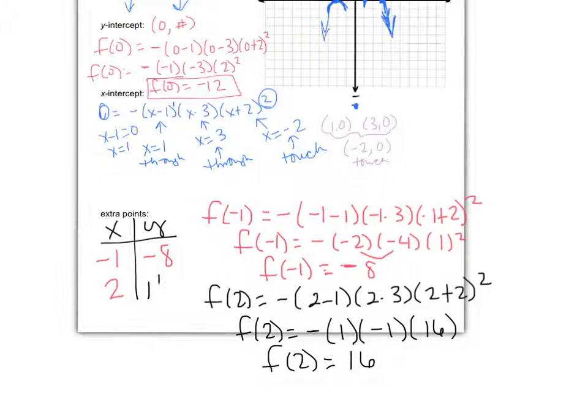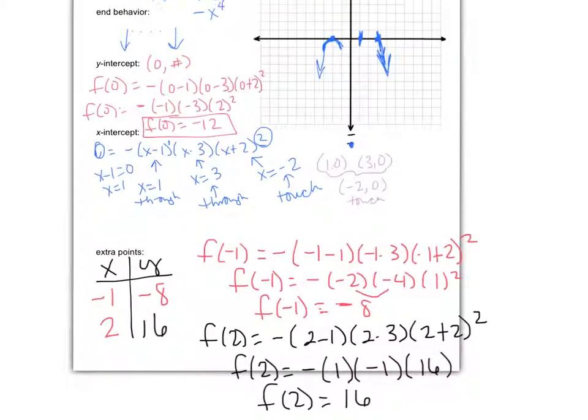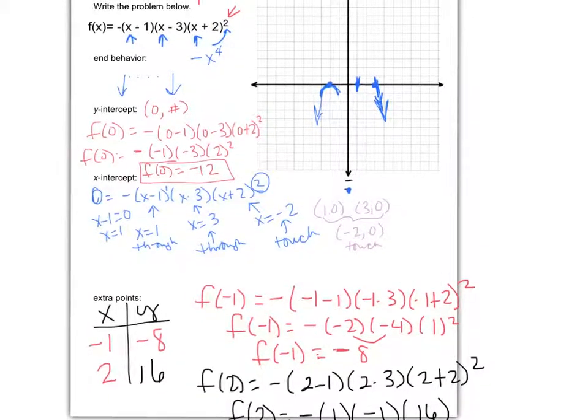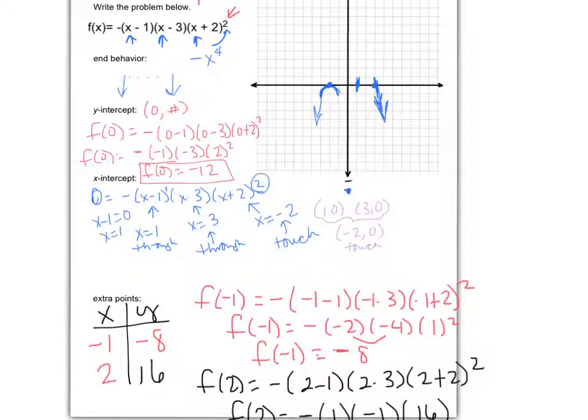So a negative times a negative gives me a positive. So f of 2 is 16. Now that is super deceptive because you would think as close as those x values are that you would have a number that was closer to that. However, when you go to put this on your graph, the point negative 1, negative 8, and the point 2, 16, that's going to make a difference here.